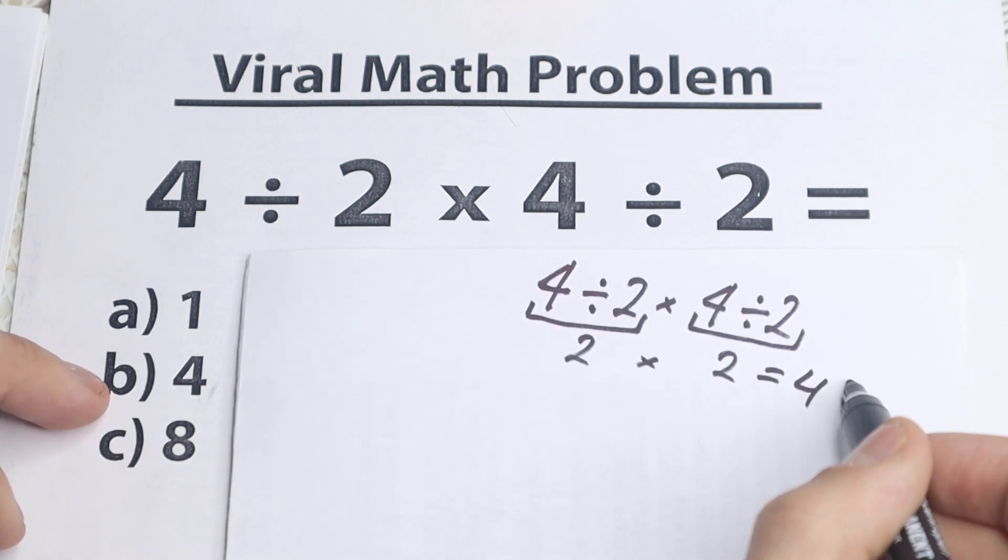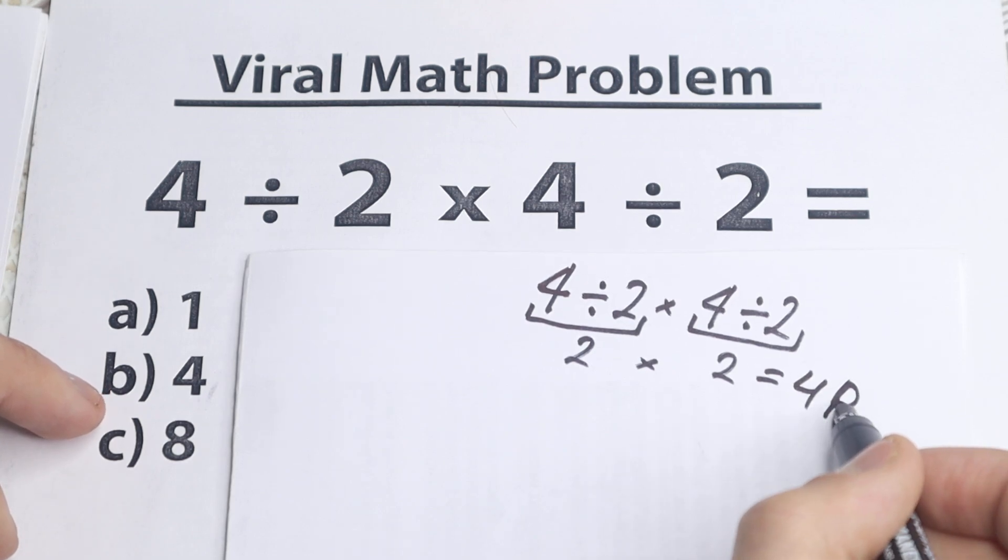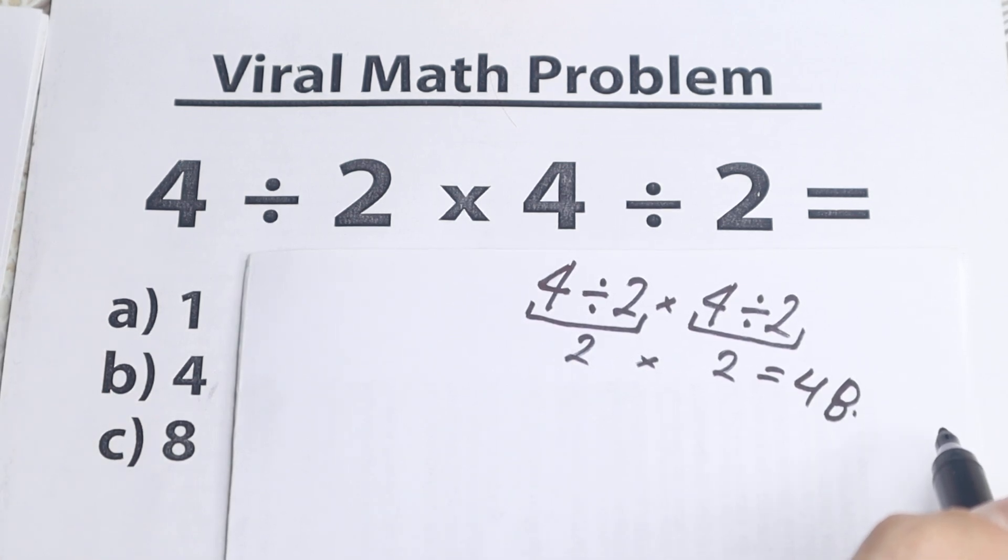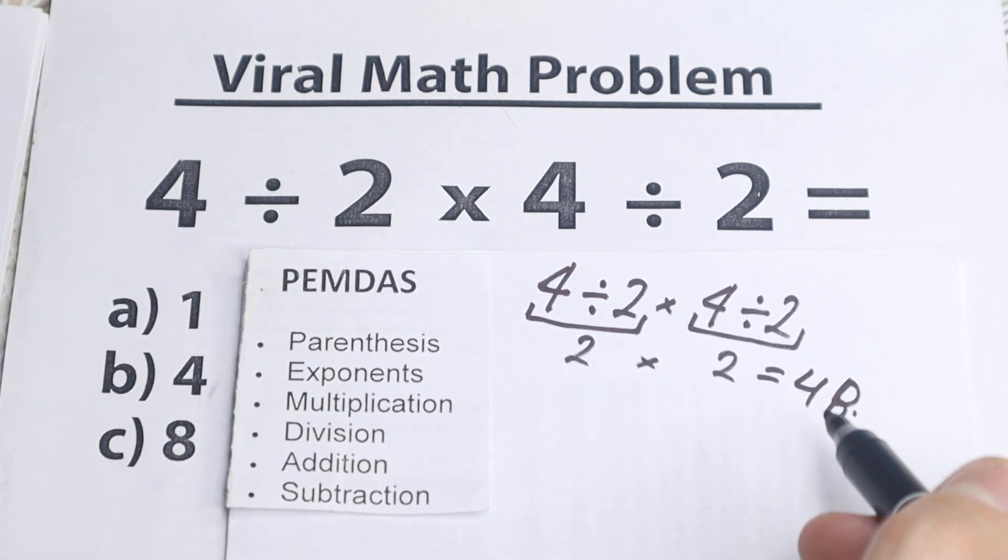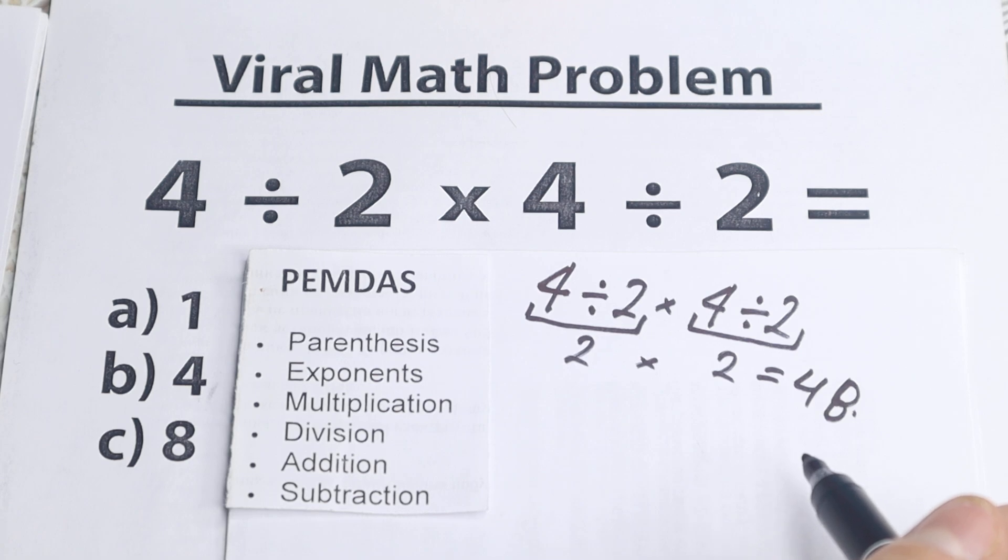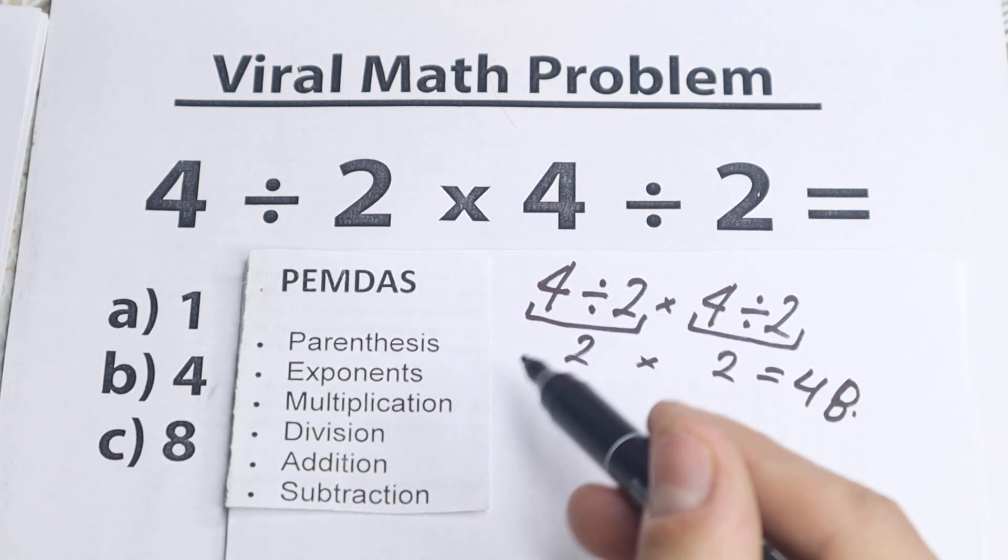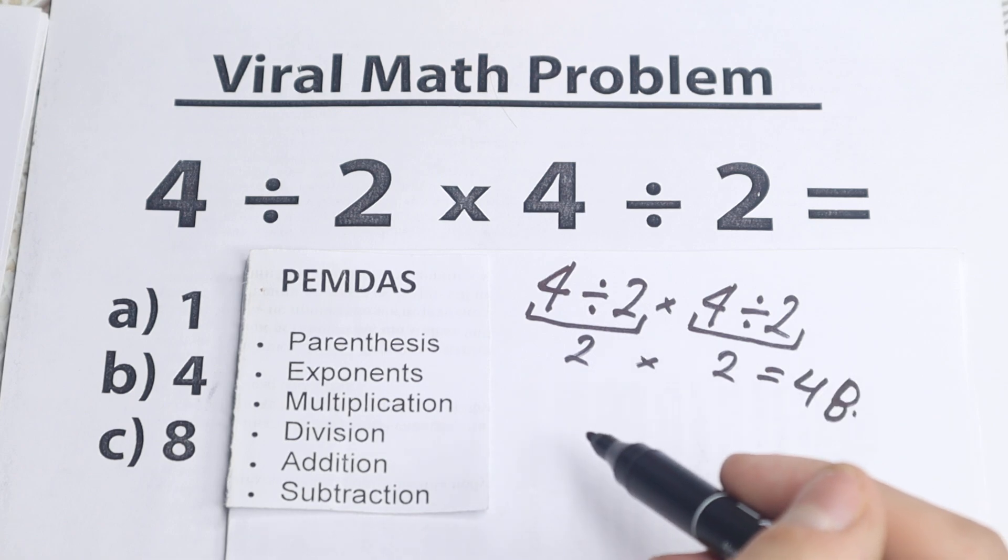2 times 2 equal to 4. And they say, okay, we have this option. Option b is a correct answer. But then I show them, okay, this is order of operation. Because obviously whatever order you select is going to create a different answer. So we need to understand what is the correct order to do this problem. So this is the main popular order in the world PEMDAS.